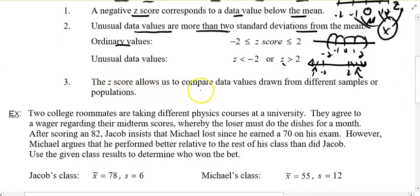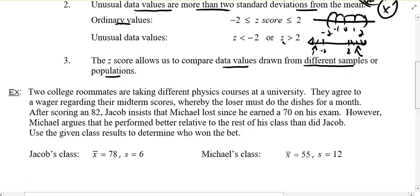The z-score allows us to compare data values from different samples or populations. Instead of taking three different classes and figuring out the average for each class and the standard deviation, if there's a curve, I could figure out the z-score of all the students and then I could compare them apples to apples. Very easy.